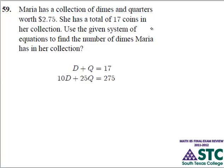The following presents a system of equations that we're going to have to solve. Maria has a collection of dimes and quarters worth $2.75. She has a total of 17 coins in her collection. We're to use the given system to find the number of dimes that she has in her collection.